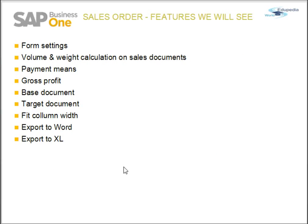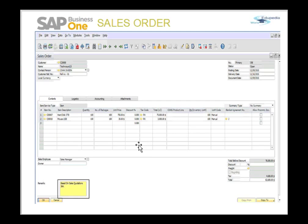Now let's look at the topics we will cover in the coming slides. We'll look at form settings, where you can choose what you want to see on the grid, at the header level, footer level, or in the middle grid. We'll also cover volume and weight calculations on sales documents, payment means options, gross profit visibility, base and target documents, fitting column width, and how to export a sales document to Word or Excel.